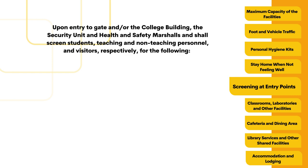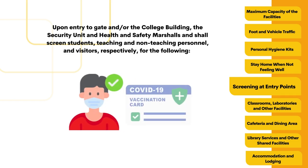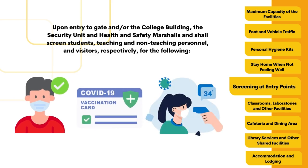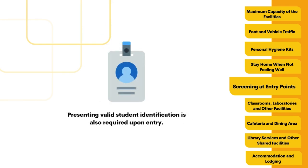The security unit and health and safety marshals shall screen students, teaching and non-teaching personnel, and visitors for the following: wearing of face mask and/or face shield as may be required by the IATF; presentation of vaccination card or equivalent; and body temperature check. Individuals will not be allowed to enter the campus if they have a temperature of 37.5 degrees or higher, even after a five-minute rest. Such individuals may temporarily be placed in the isolation room until transported to their home or health facility. The medical team will attend to individuals manifesting COVID-19 symptoms based on DOH guidelines.